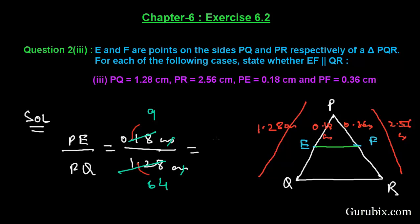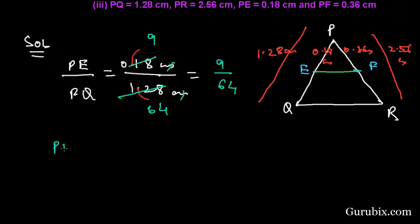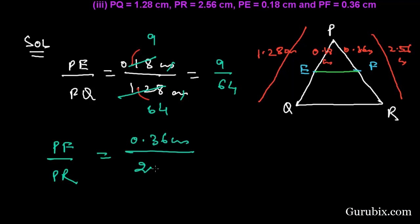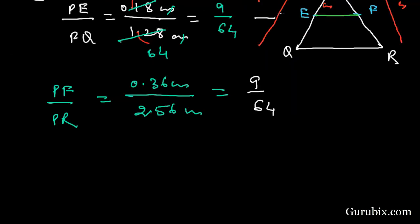Now we shall calculate PF over PR. This equals 0.36 cm over 2.56 cm, which also simplifies to 9 over 64. This is equation number 1 and this is equation number 2.